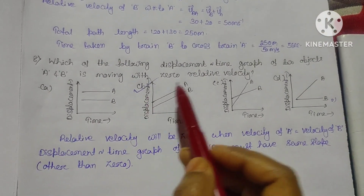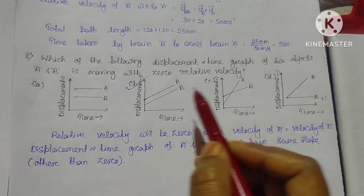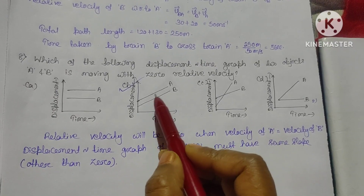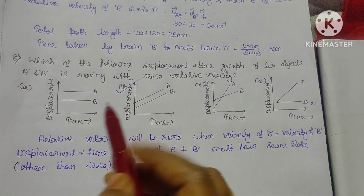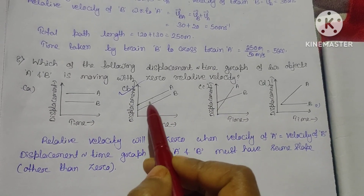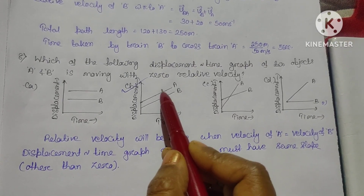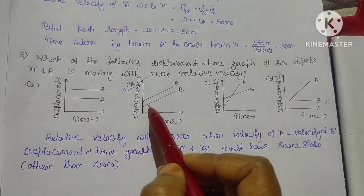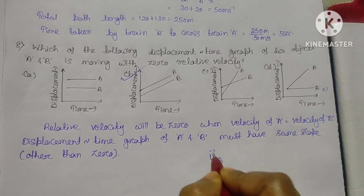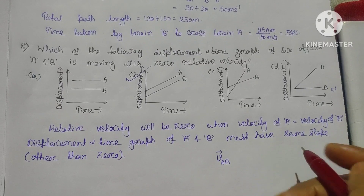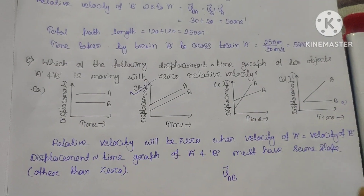The next question: Which displacement-time graph of two objects A and B shows zero relative velocity? When the slope of A and B in the displacement-time graph is the same, it means their velocities are equal. The relative velocity VAB = VA minus VB = 0 when VA equals VB. The answer is graph B, where both lines have the same non-zero slope.